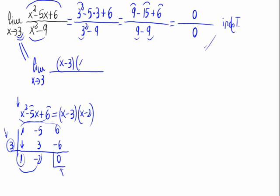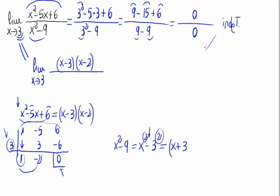Underneath, x squared minus 9 can be expressed as x squared minus 3 squared, which is a difference of two squares, and that equals x plus 3 times x minus 3. So now this x minus 3 in the numerator and the x minus 3 in the denominator cancel.